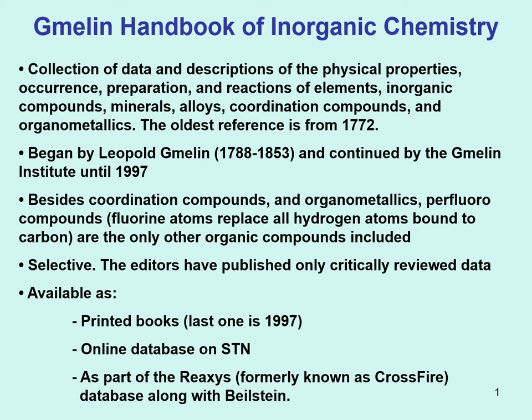In the next several slides we'll see the continuation of this in an online database. One type of organic compound covered in Gmelin is perfluorocompounds — compounds where all the hydrogens are replaced by fluorine. 'Per' means maximum possible substitution. Those compounds are in this handbook. The most useful feature, just like the NIST WebBook, is that only critically reviewed data is included, so when you find a reference and its properties you don't have to look any further.